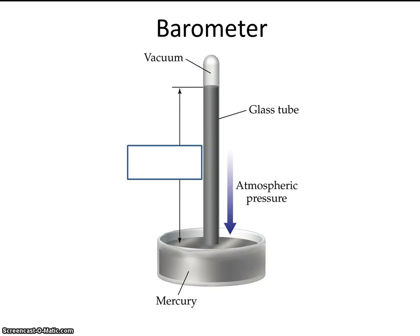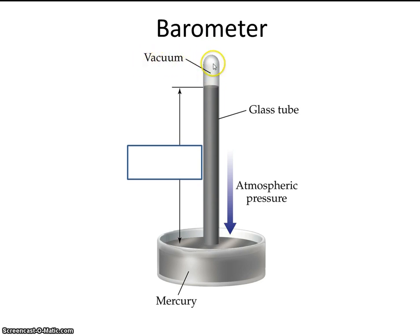This picture you're looking at is a cartoon drawing of something called a barometer. A barometer measures pressure. So this is a glass tube, and inside the glass tube is a vacuum. A vacuum means nothing, so inside of this tube was nothing — not even any air. Everything was evacuated from the tube.